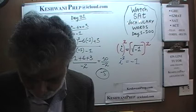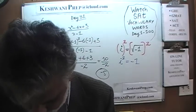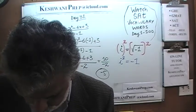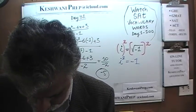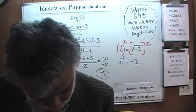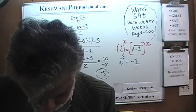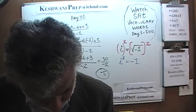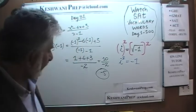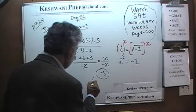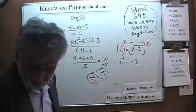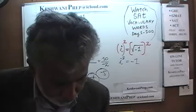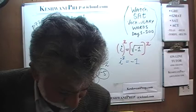10 over negative 2 gives us negative 5. That is answer choice A.